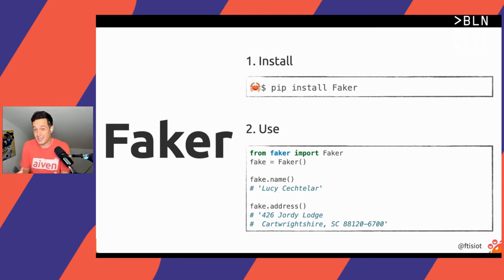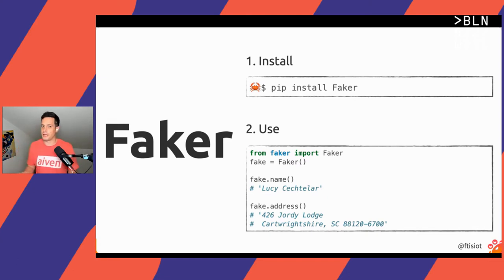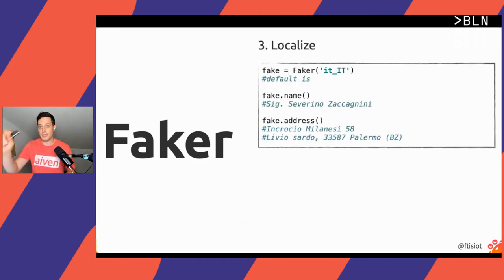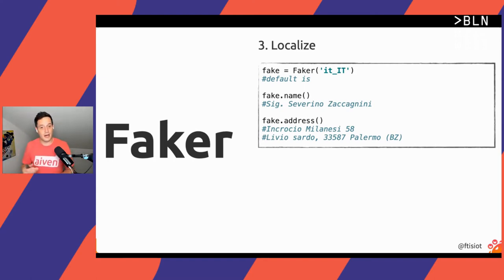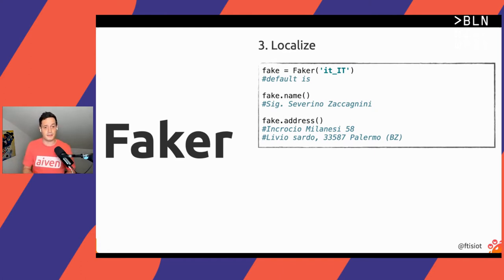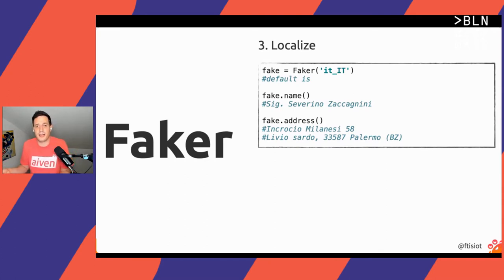This is just the surface of what Faker can do. As you can guess, I'm Italian, so I may want to produce Italian-sounding names and addresses. I can simply localize the Faker instance by passing the Italian parameter. Now every time I call the name function, I will create an Italian name — like 'Severino Zaccagnini'. And the address comes back as 'in Croce Milanese 58, Olivia Sardo Palermo' — Italian enough!